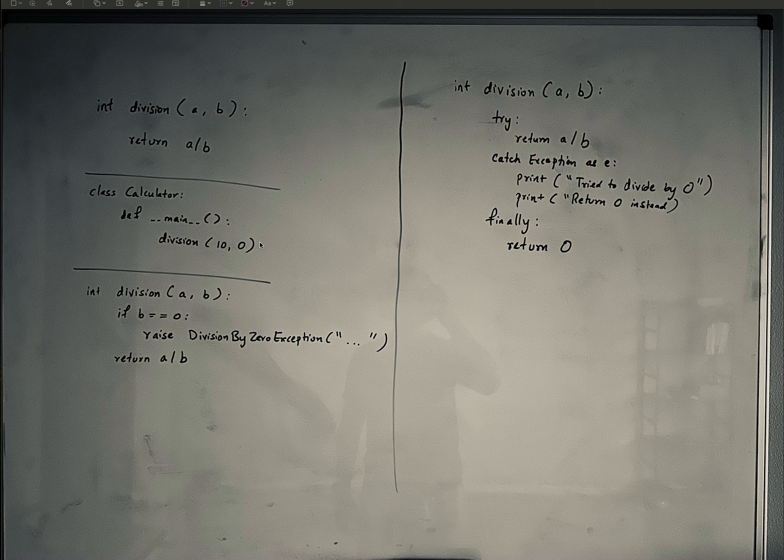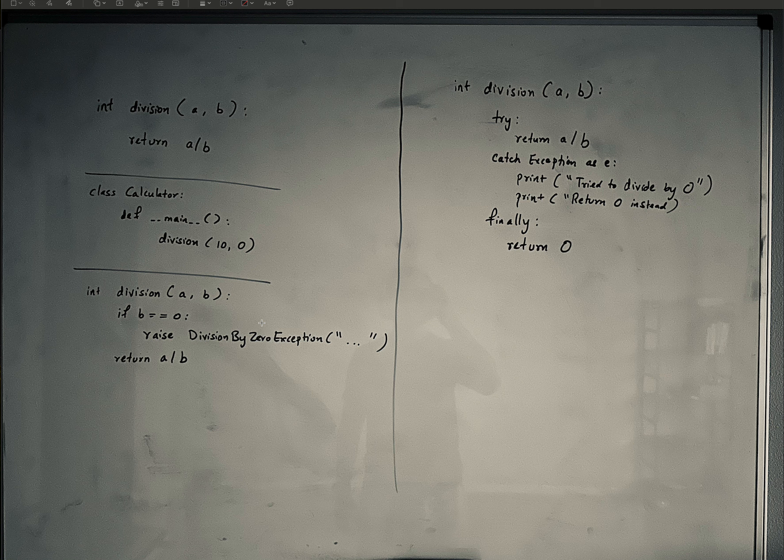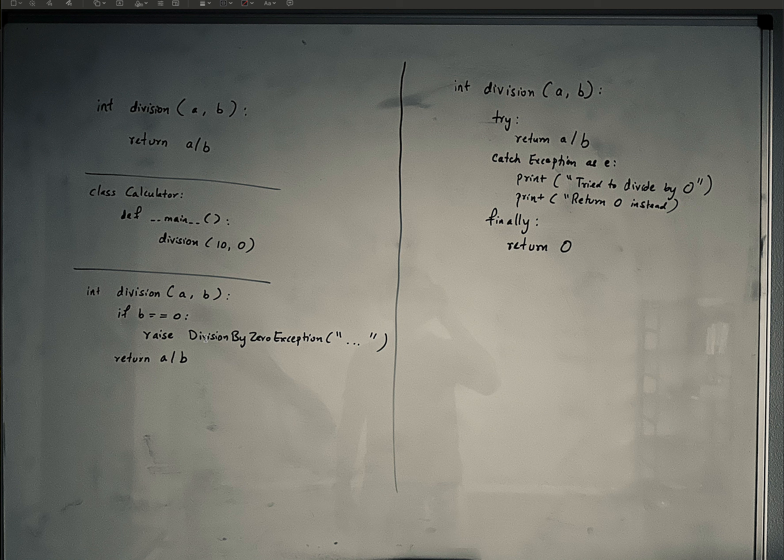So for example, if you wanted to write your own exception clause instead of a division by 0 exception, that says don't do this exception, then you can define an exception yourself and you can raise it.